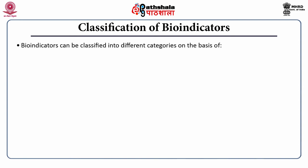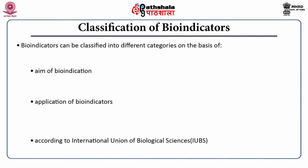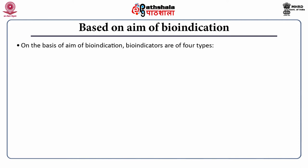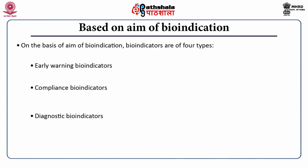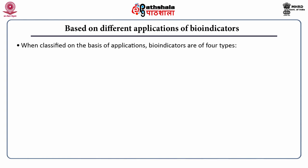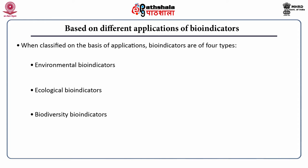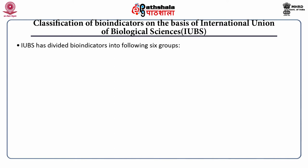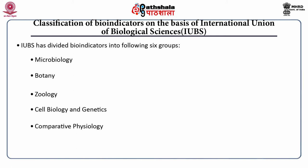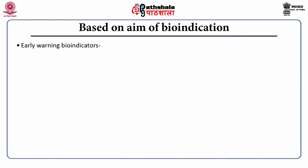Classification of bio-indicators. Bio-indicators can be classified into three different categories: on the basis of aim of bio-indication, application of bio-indicators, and according to the International Union of Biological Sciences. On the basis of aim of bio-indicators, they are classified into four categories: early warning indicators, compliance indicators, diagnostic indicators, and accumulation indicators. On the basis of application of bio-indicators, they are classified into four categories: environmental bio-indicators, ecological bio-indicators, biodiversity bio-indicators, and pollution bio-indicators. According to the International Union of Biological Sciences, bio-indicators are classified into six categories: microbiology, botany, zoology, cell biology and genetics, comparative physiology, and hydrobiology.